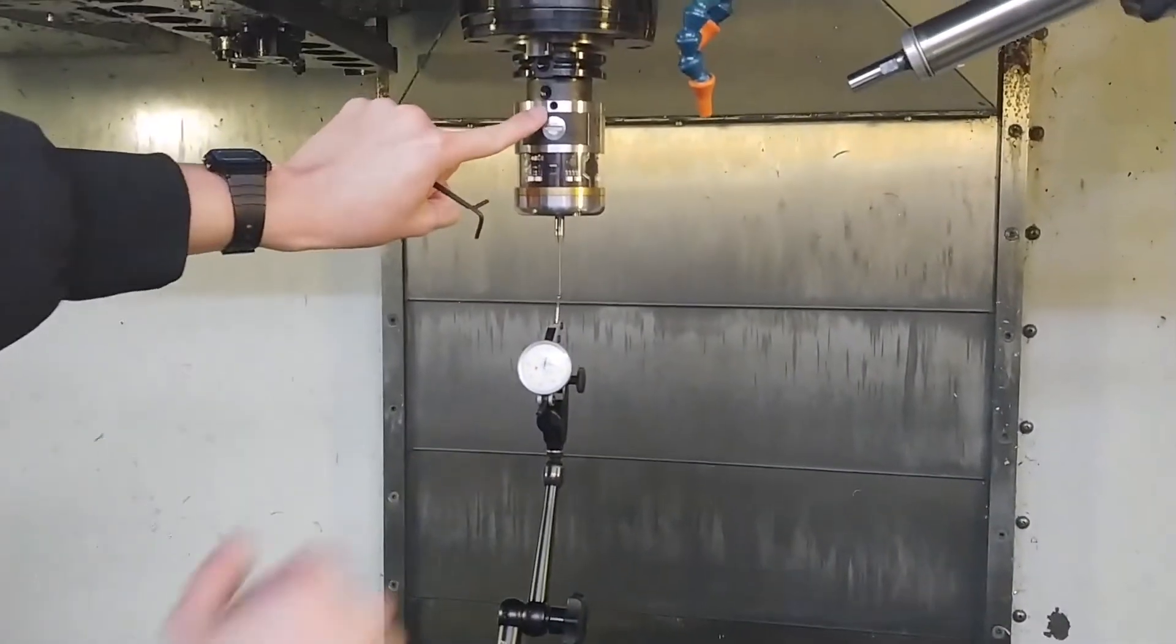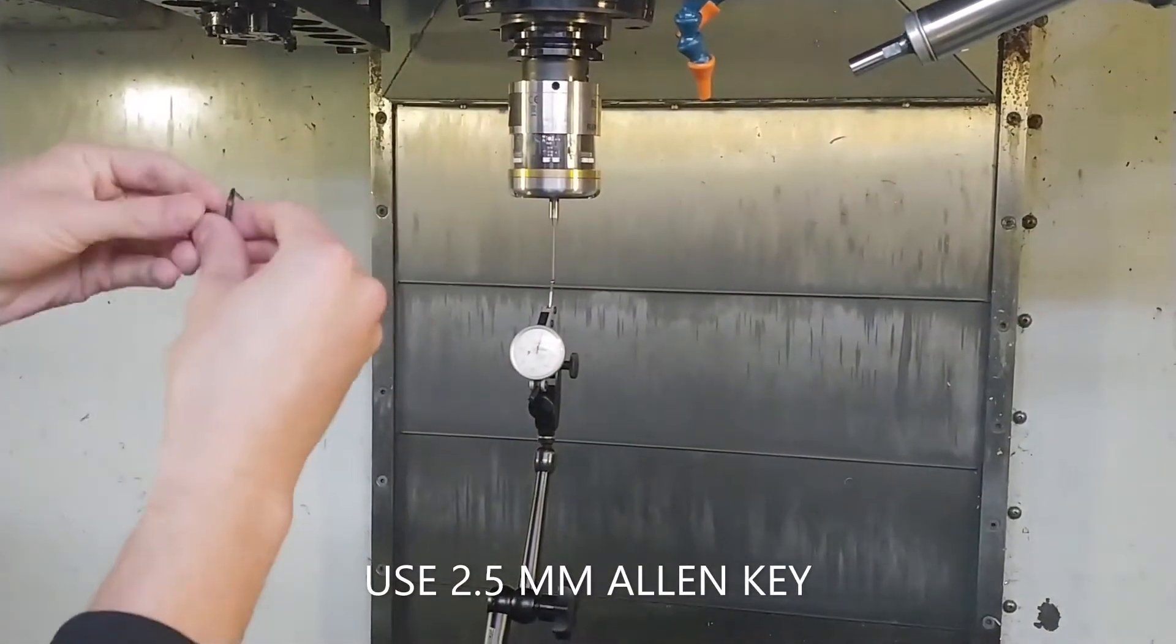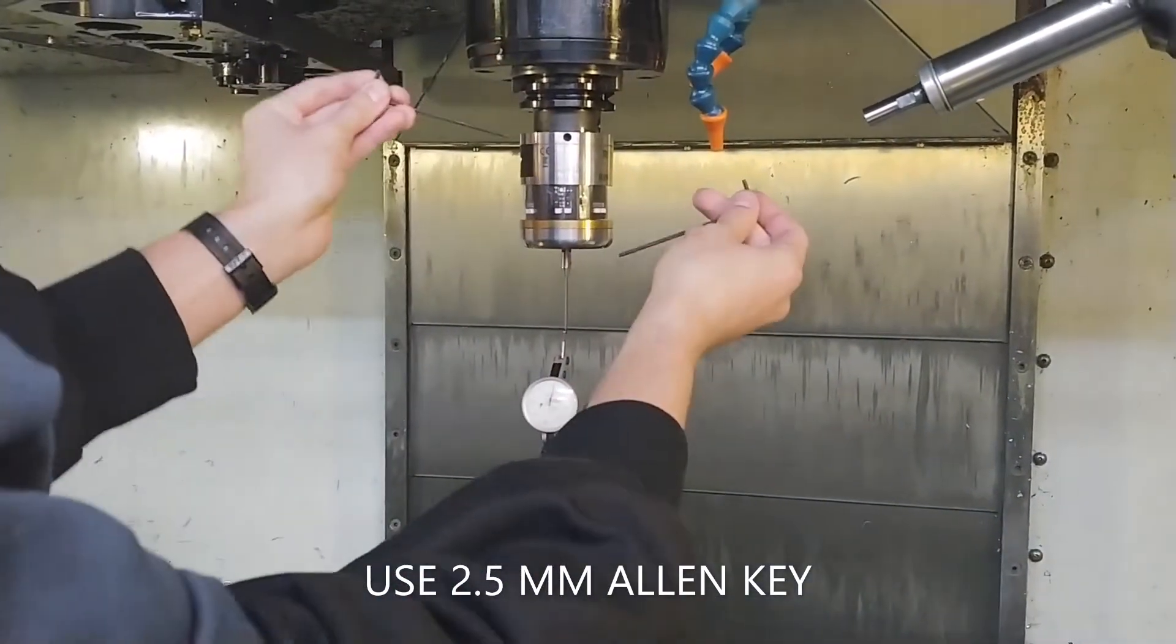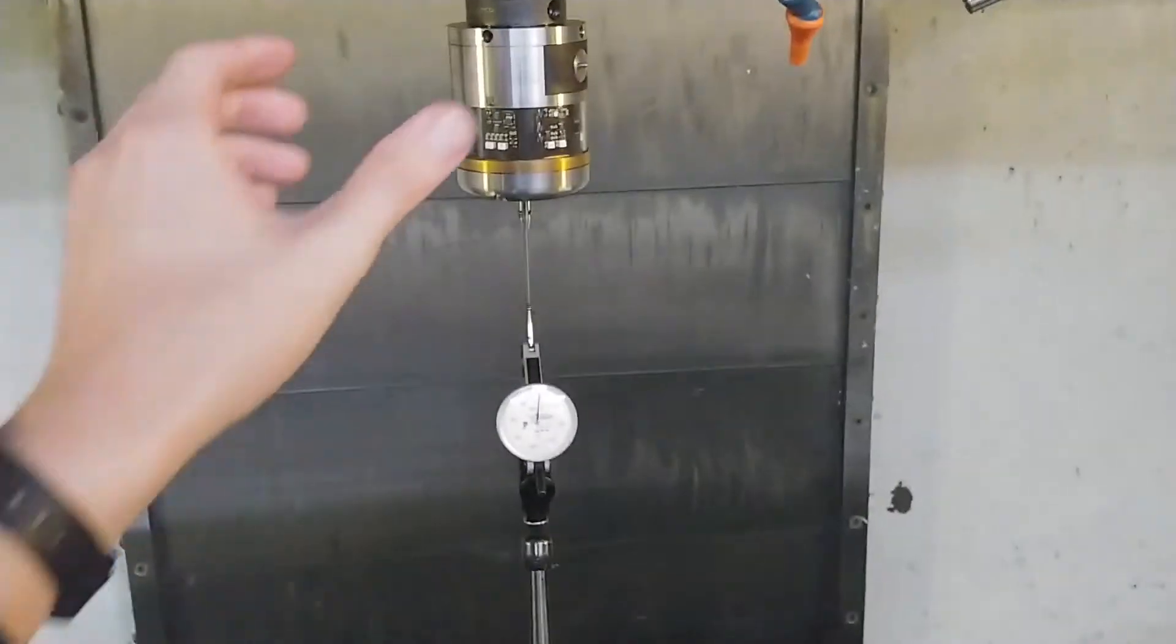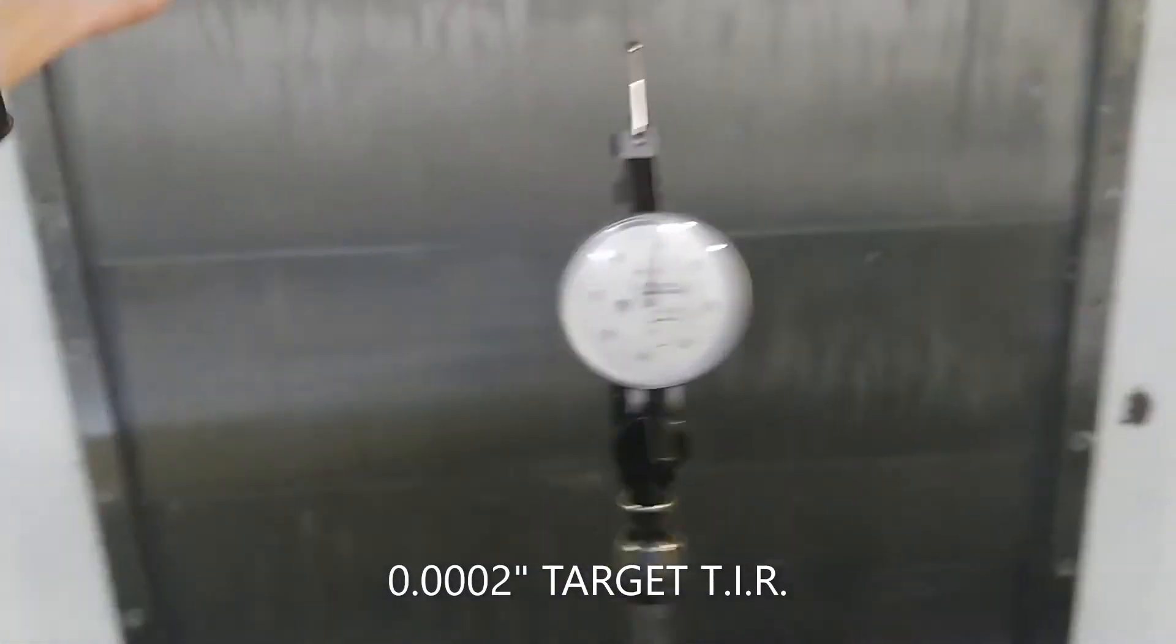Use the four adjustment screws on the probe tool holder to minimize the runout by loosening and tightening opposing screws in pairs. A total indicated reading of 2 ten-thousandths of an inch is easily achievable.